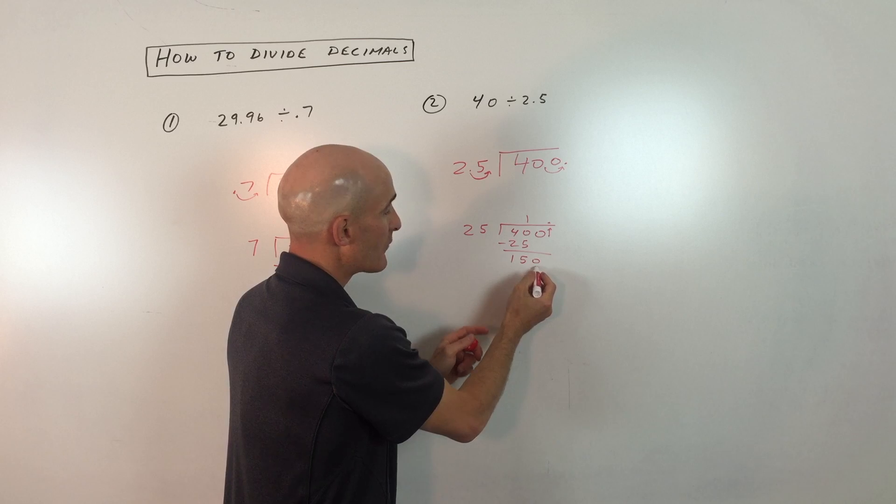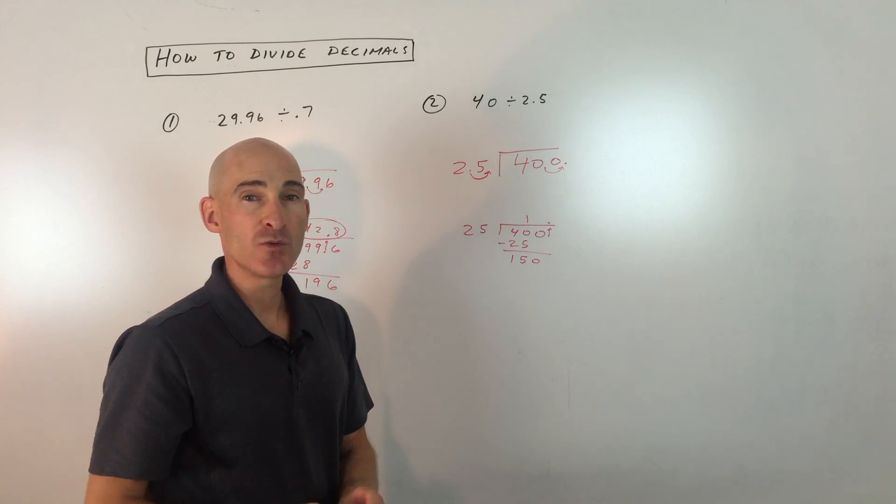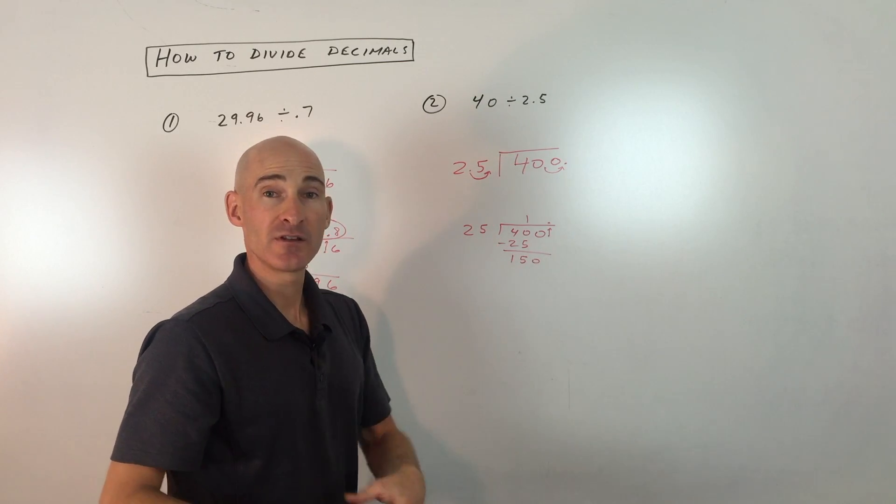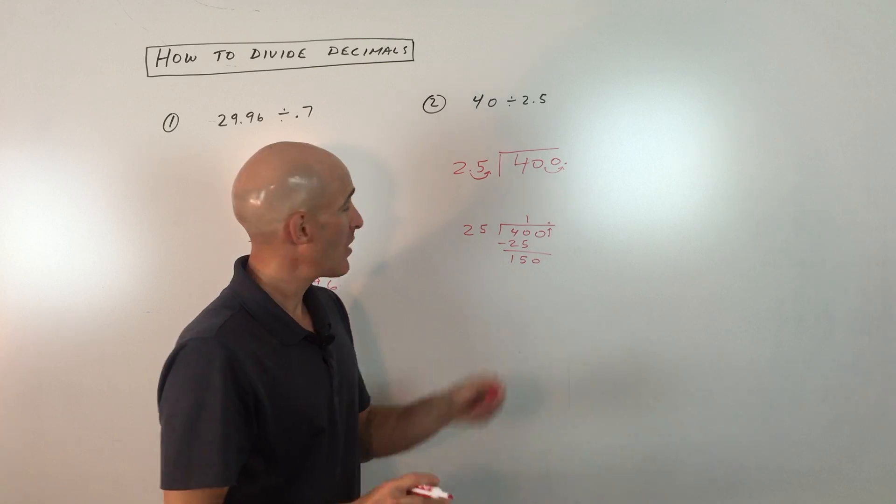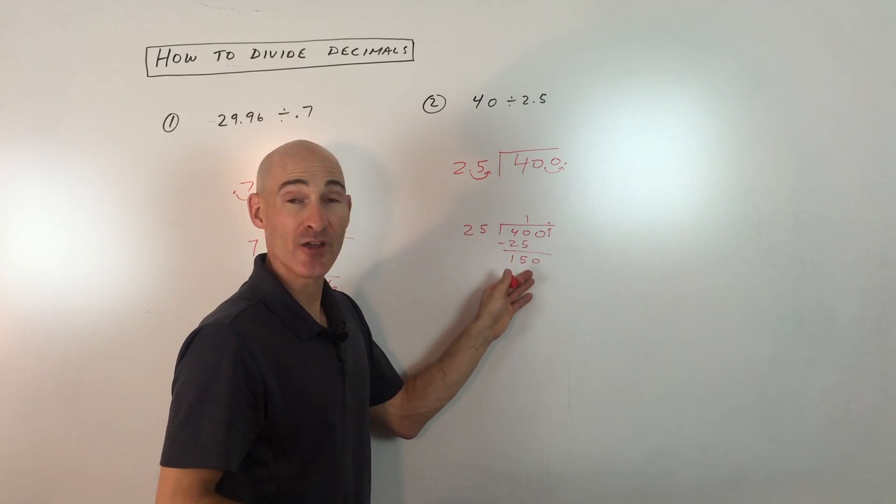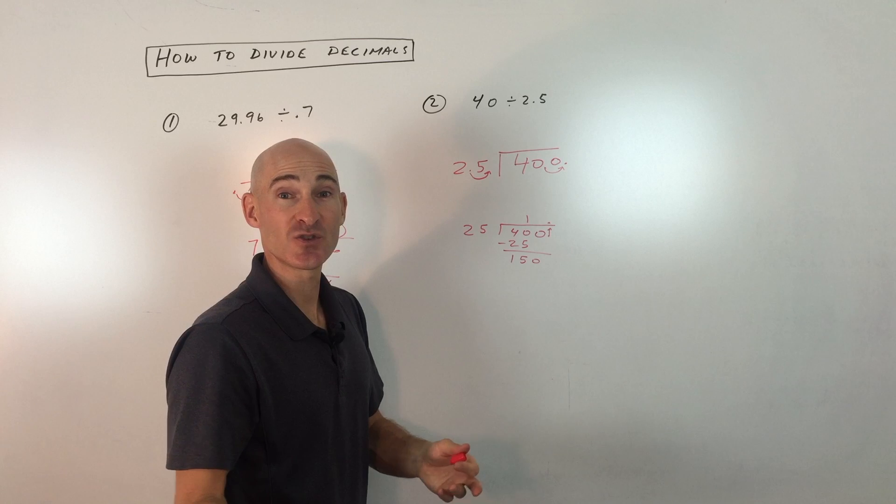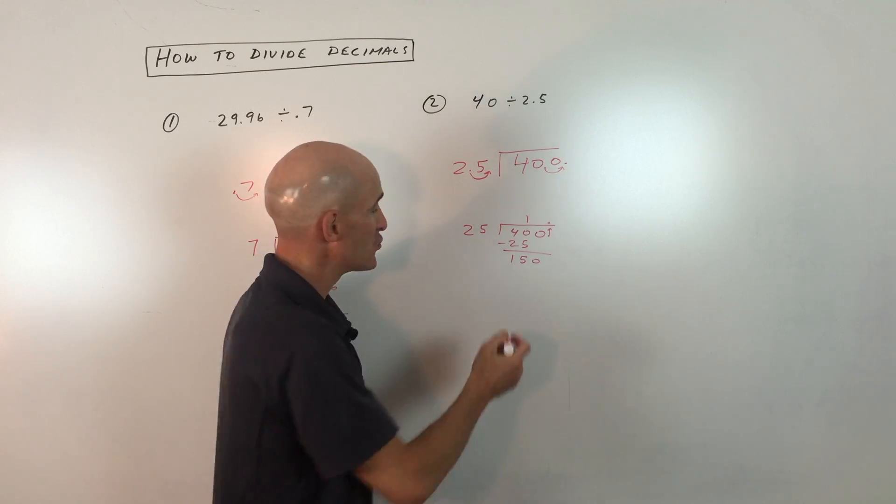How many times does 25 go into 150? Here's a hint. When you're working with 25, you can think of quarters, like 25 cents. So how many quarters go into $1.50? That's 6 quarters. 4 quarters in $1 plus 2 more for the 50 cents.